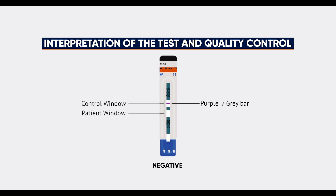The appearance of one purple or grey bar in the control window of the strip, labelled 'control', and no purple or grey bar in the patient window, labelled 'patient', indicates the TB-LAM result is negative.